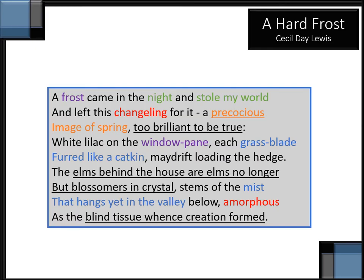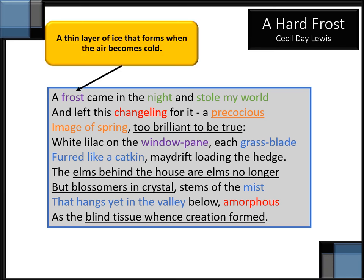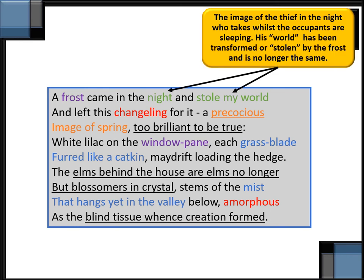Let us now take a closer look at the first stanza. We see in the first line: 'a frost came in the night and stole my world.' The thin layer of ice that forms when the air becomes cold, usually below minus two degrees Celsius, is called frost. We see the image here of a thief in the night that comes and steals the world. The world has been transformed or stolen by the frost, and it's no longer the same.